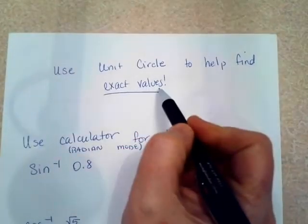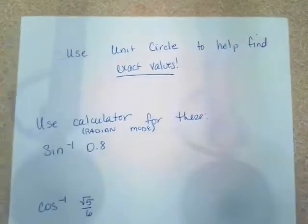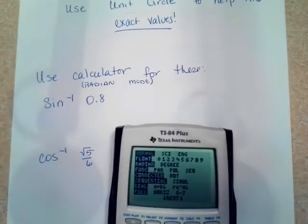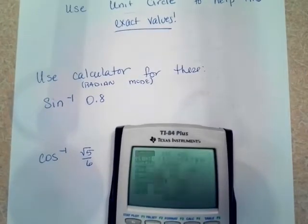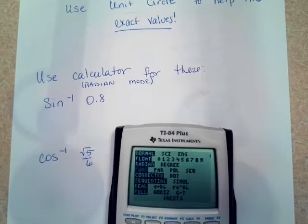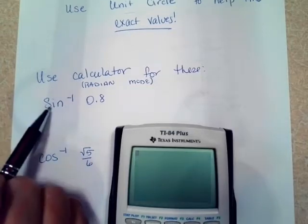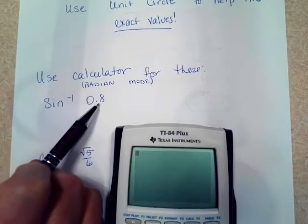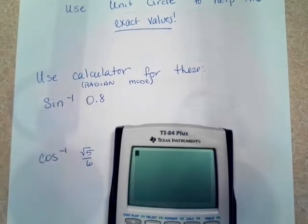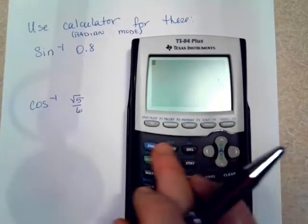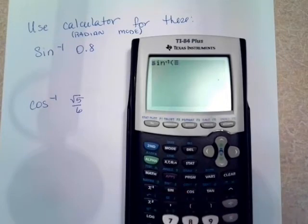When it's asking you for exact values, I encourage you to use the unit circle. If they're asking you for a calculator, then I want to tell you to put your calculator in radian mode, which this one is in, radian mode. You see it right there. And then when you have sine inverse, they're telling you the sine. They're wanting the angles, what they're wanting. So it's second sine. Let me move this so you can see the buttons that I press. Second sine, and it gives you sine inverse.